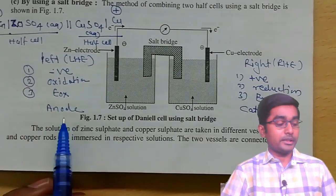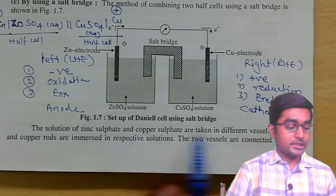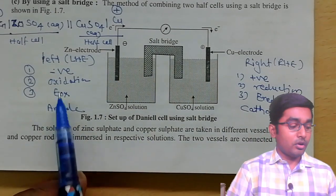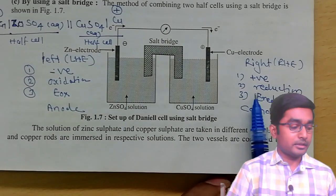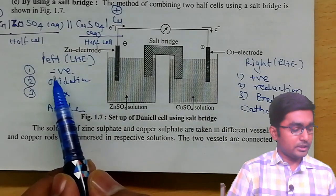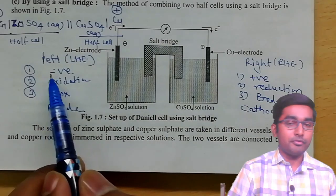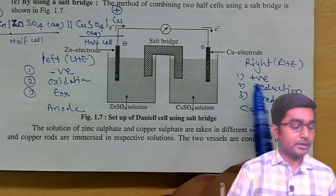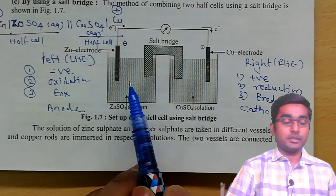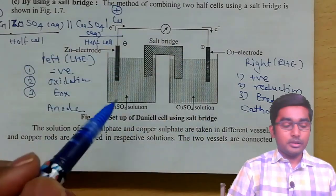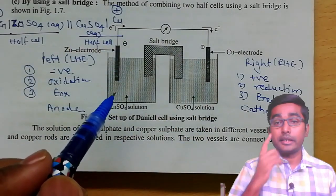To remember this, look alphabetically: A comes before C — so Anode is on the left, Cathode is on the right. O comes before R — Oxidation on the left, Reduction on the right. N comes before P — Negative on the left, Positive on the right. Now, what if we have a gas electrode?